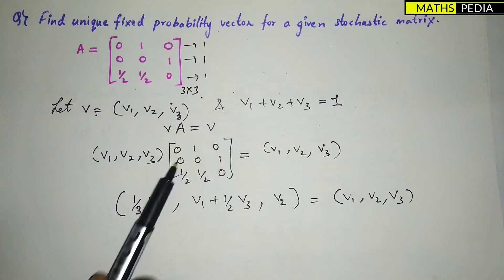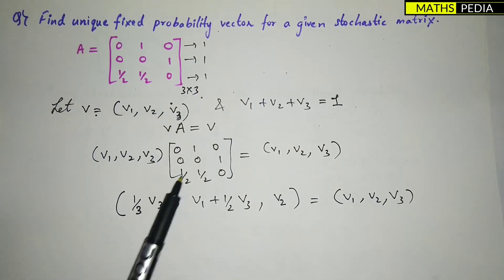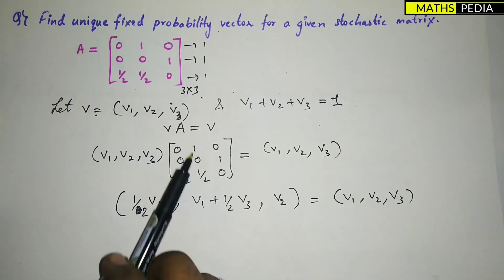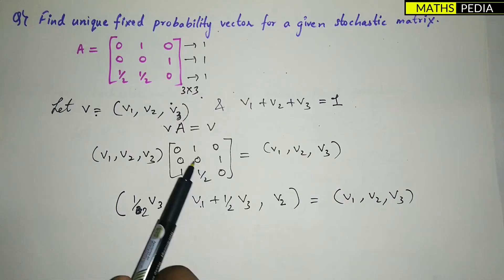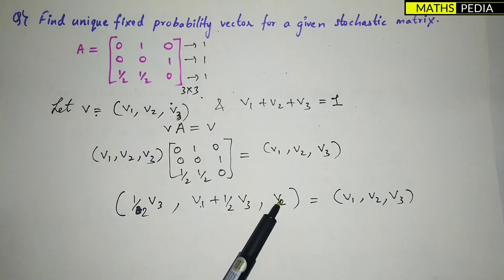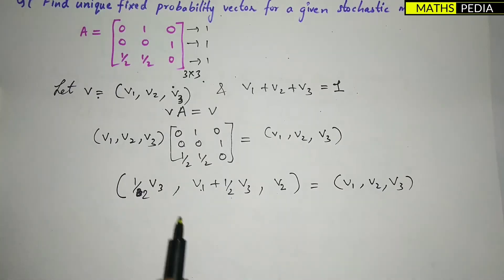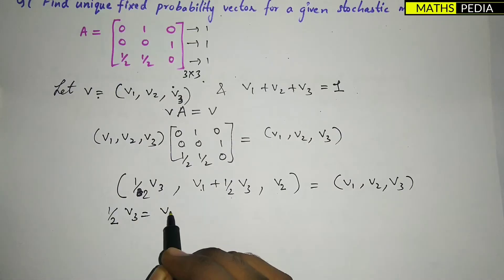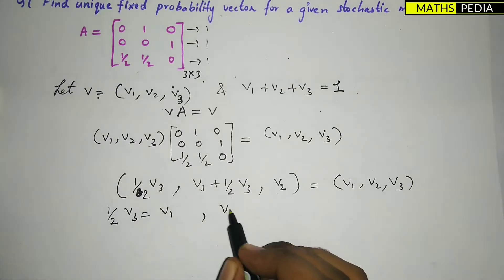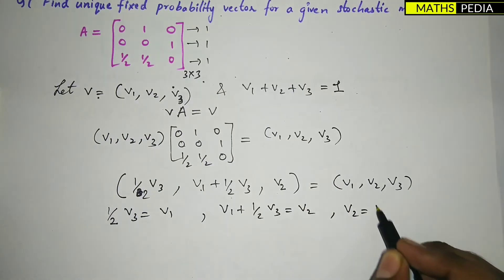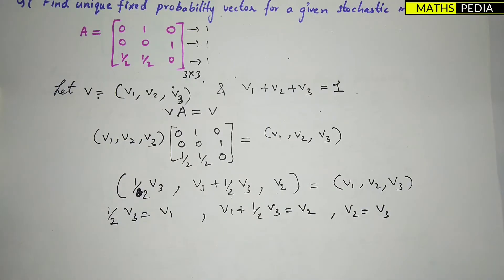Comparing both sides gives us three equations: (1/2)v3 = v1, then v1 + (1/2)v3 = v2, and v2 = v3.